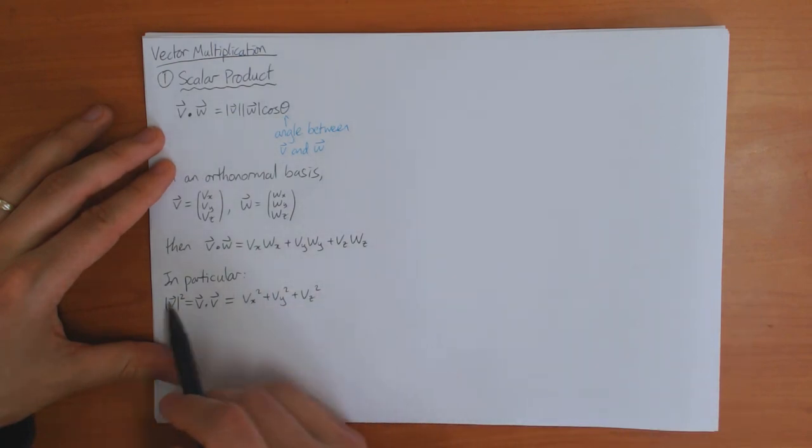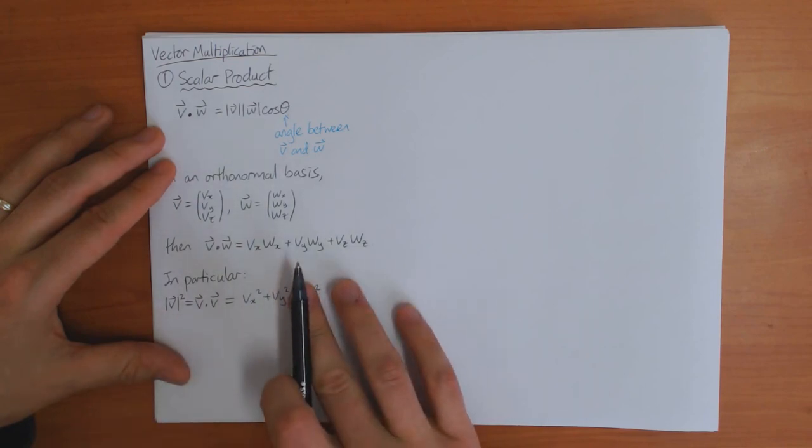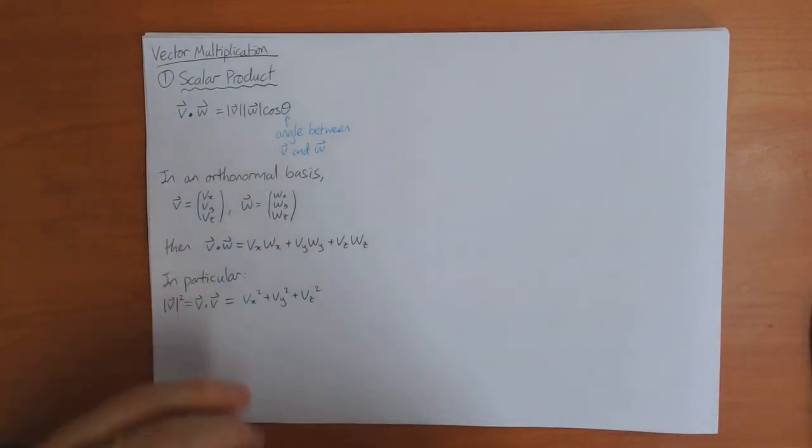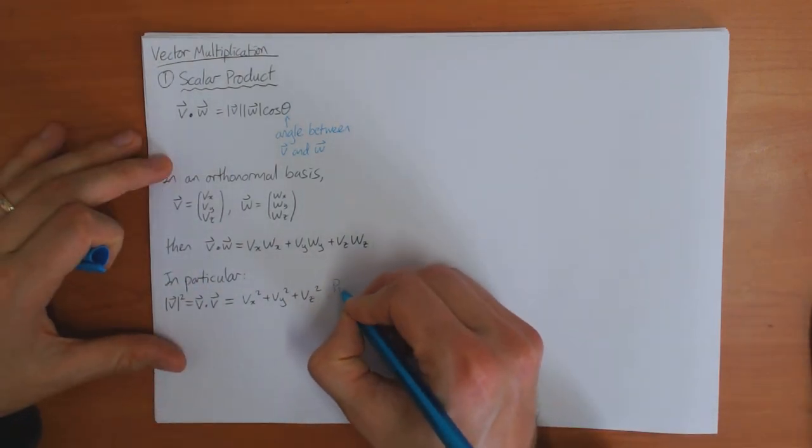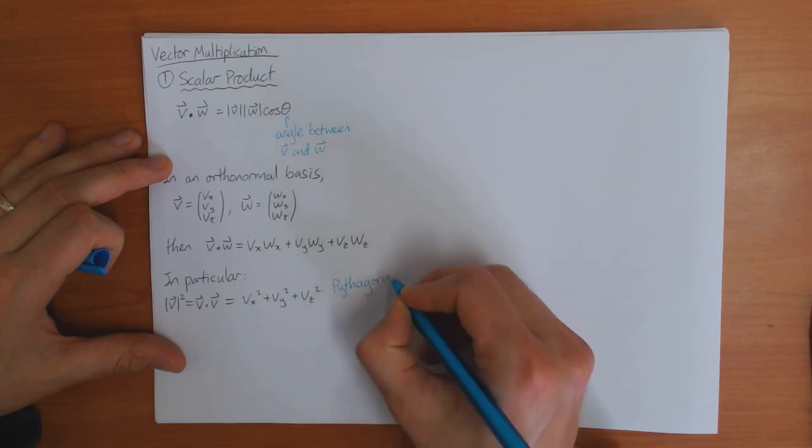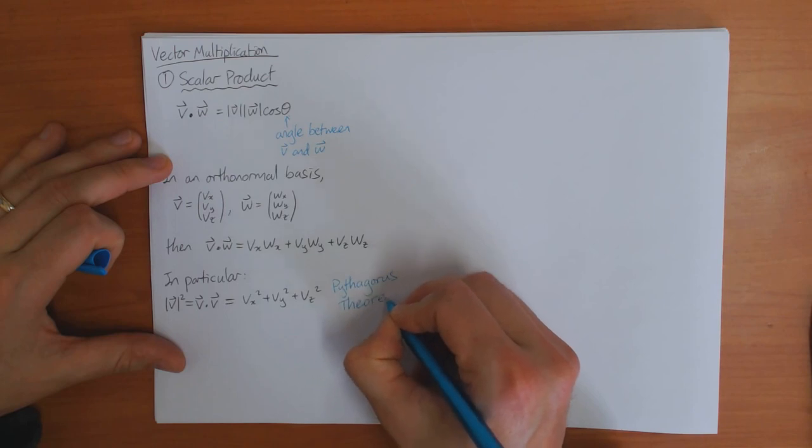So the length of v squared is equal to vx squared plus vy squared plus vz squared. So this, you should recognize, this is just Pythagoras theorem, right? In two dimensions, it's like that. In three dimensions, it's like this. So this is just the Pythagoras theorem.